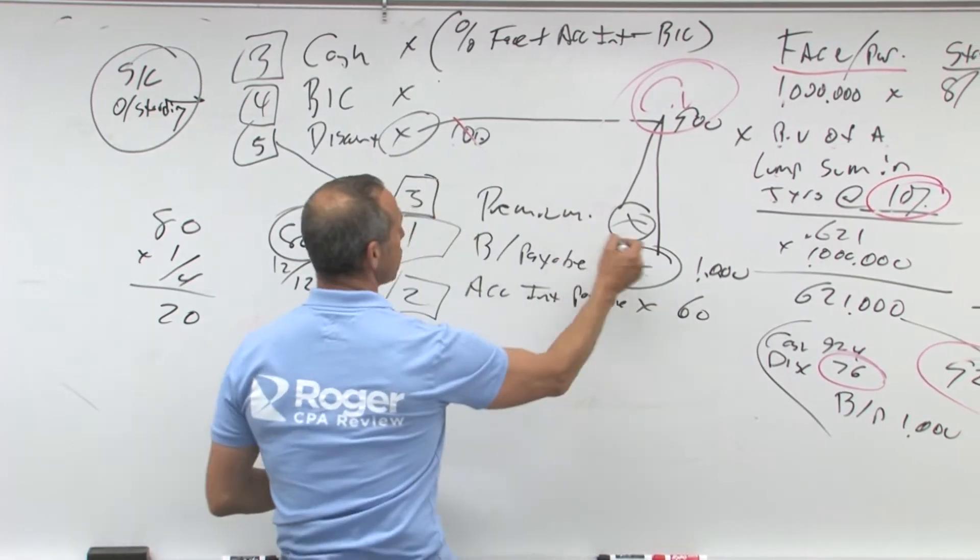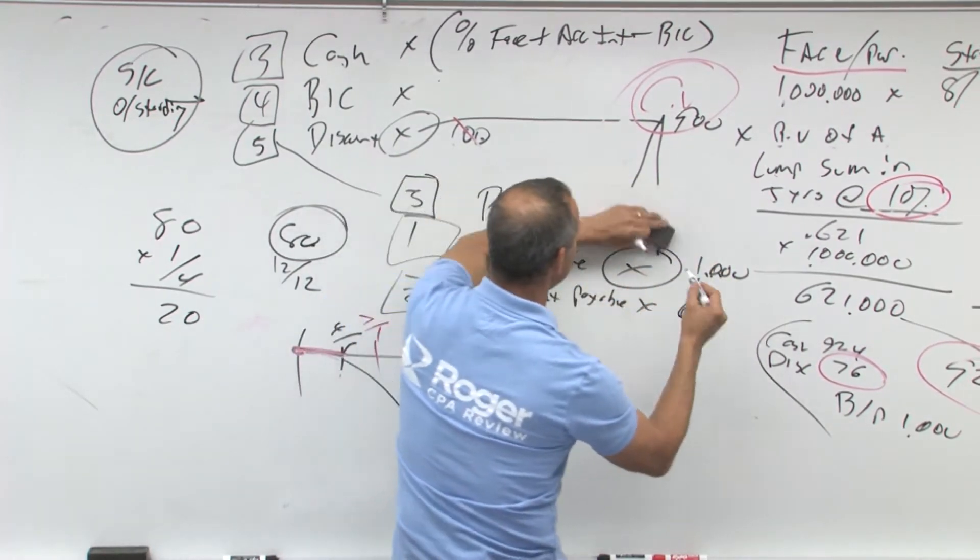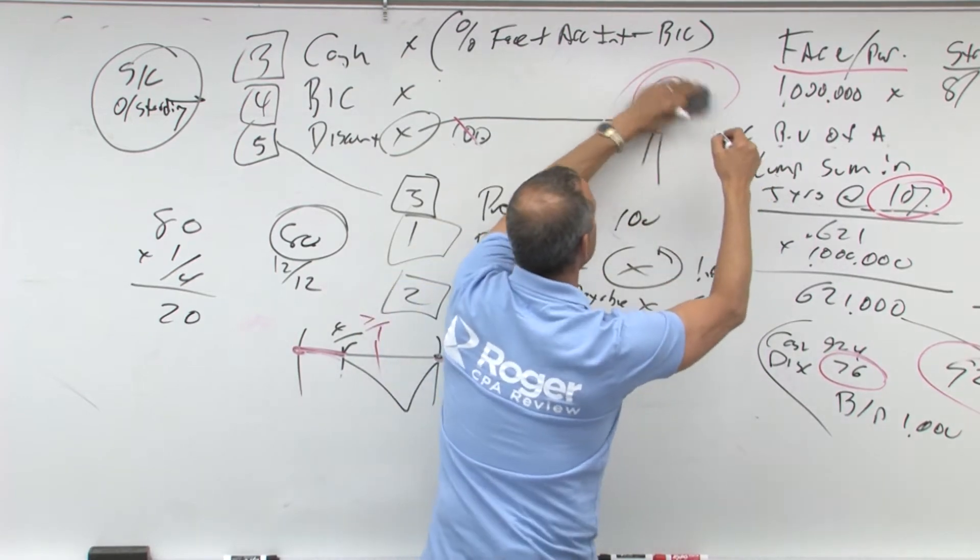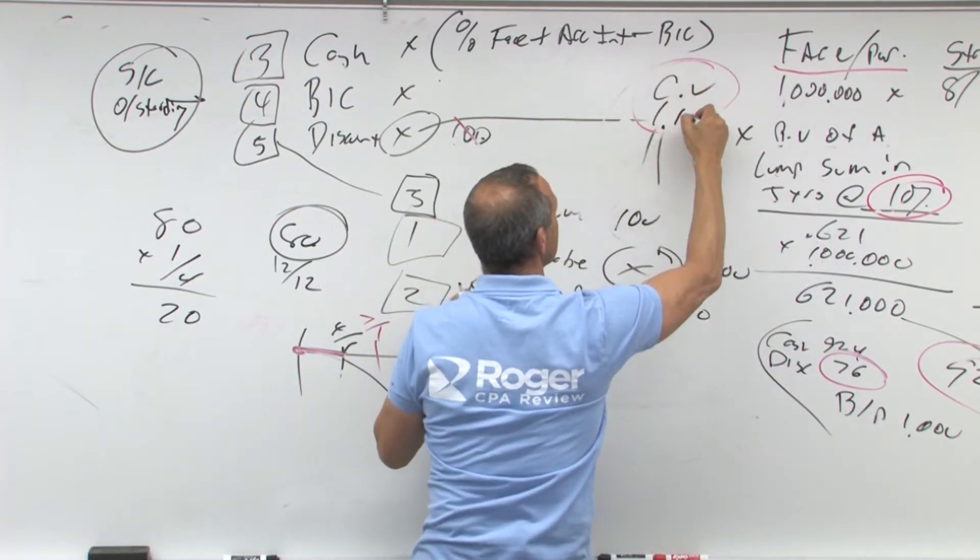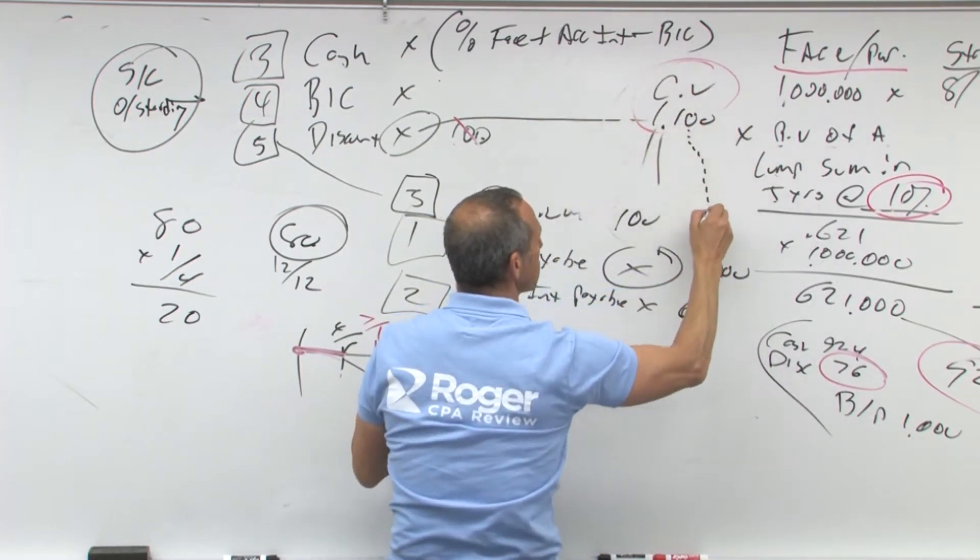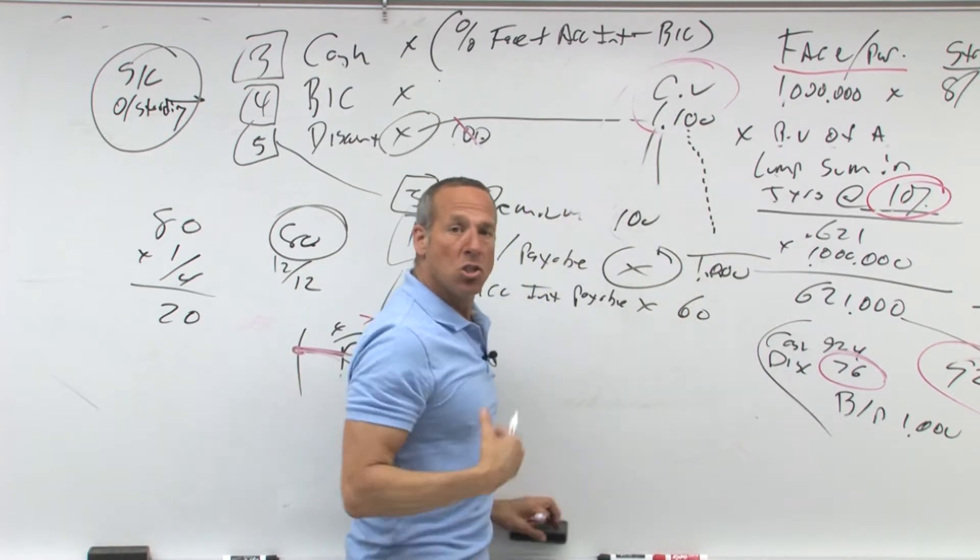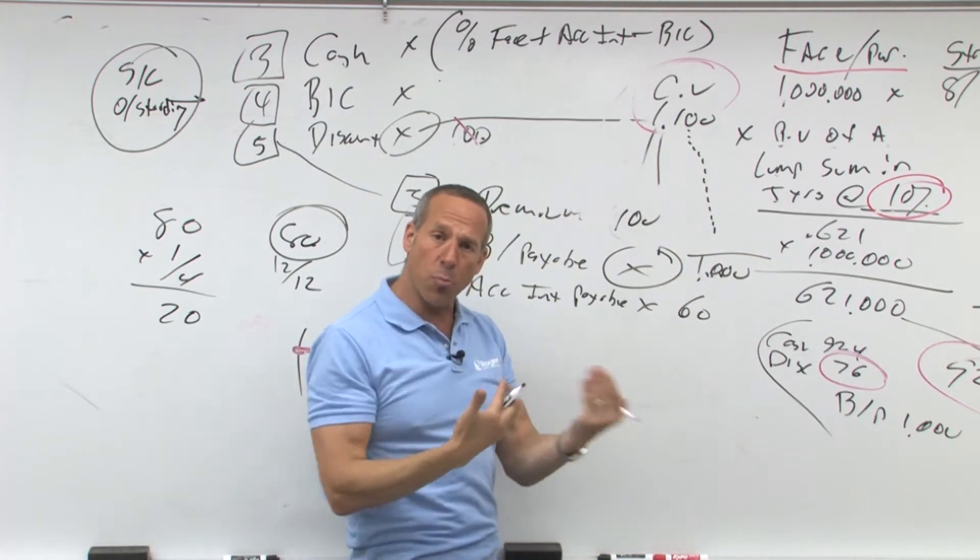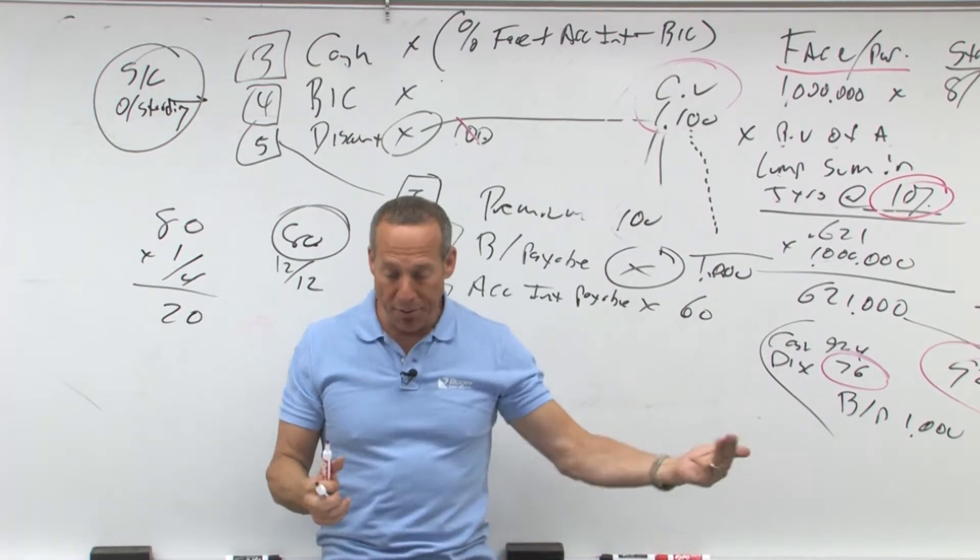What if it's a premium? Then this would be the million, the premium would be the hundred, this would be the carrying value or amortized cost, a million one, gets smaller, smaller, smaller, smaller to a million. So as you amortize out the discount or premium, what is it affecting? Our interest expense.